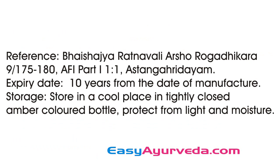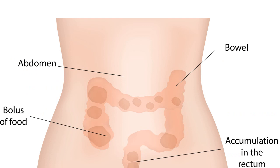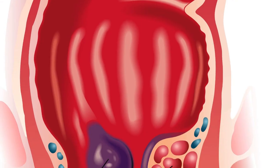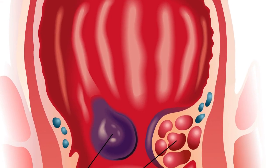Its reference is from Bhaisajya Ratnavali, Arsha Rogadhikara. Its expiry date is 10 years from the date of manufacturing. It should be stored in a cool, dry place, tightly closed in an amber-colored bottle, away from direct light and moisture. Ayurveda practitioners usually use this along with Triphala Guggulu for various conditions such as constipation and hemorrhoids.